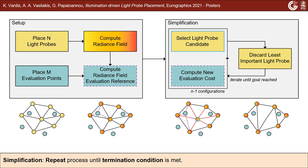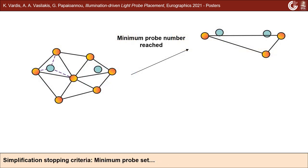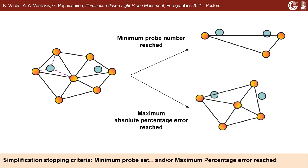This whole process is repeated until any of the terminating conditions are met. We use two user-friendly stopping conditions. First, the requested light probe number is reached. And second, the maximum percentage error is reached.